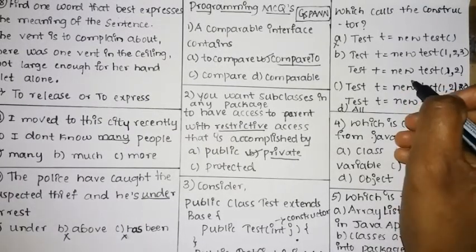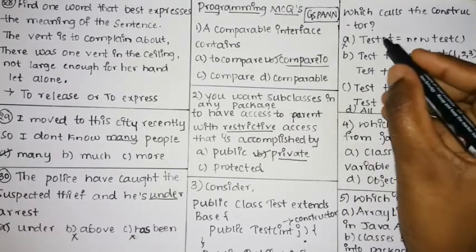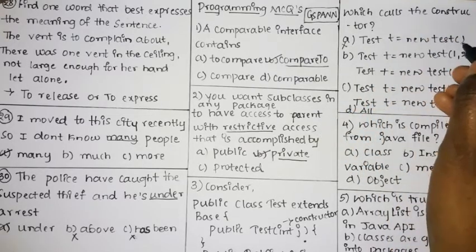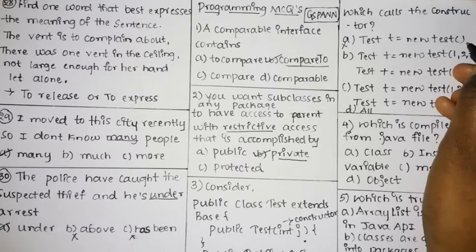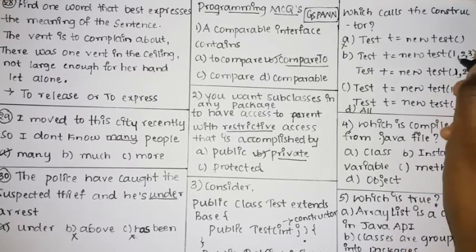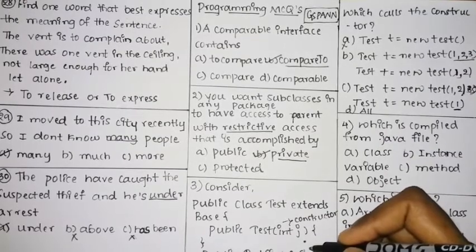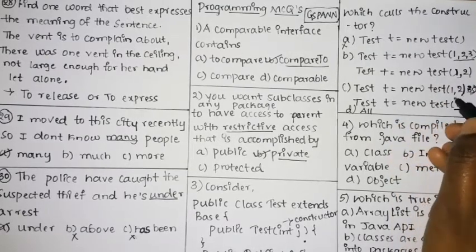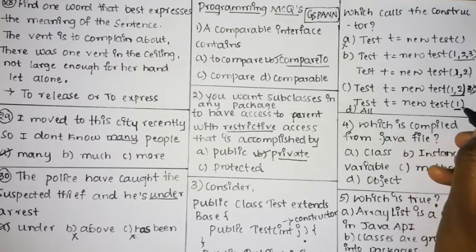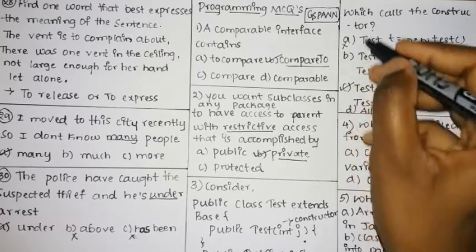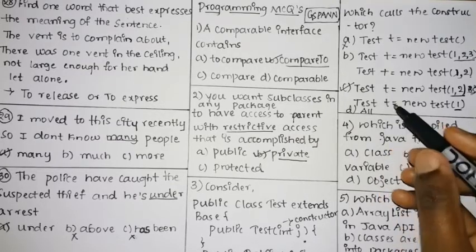The question asks: which of these calls the constructor correctly? Option A: new Test() — there is no zero-parameter constructor, so this is invalid. Option B: new Test(1, 2, 3) — takes three parameters, but we only have one- and two-parameter constructors, so invalid. Option C: new Test(1, 2) matches the two-parameter constructor, and new Test(1) matches the one-parameter constructor. Option C is the correct answer.